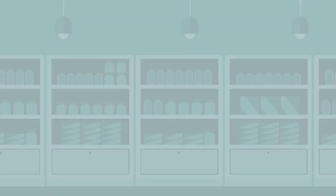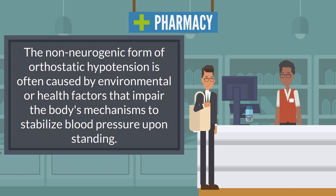The non-neurogenic form of orthostatic hypotension is often caused by environmental or health factors that impair the body's mechanisms to stabilize blood pressure upon standing. These factors include heart disease, low blood volume (hypovolemia), alcohol use, or advanced age.